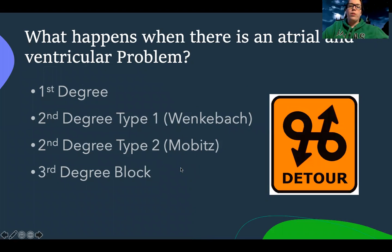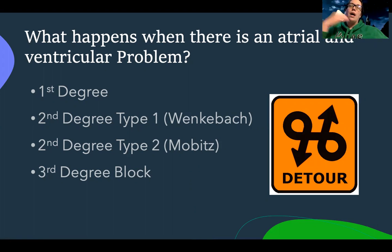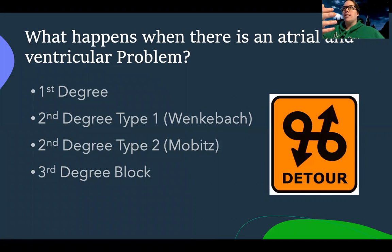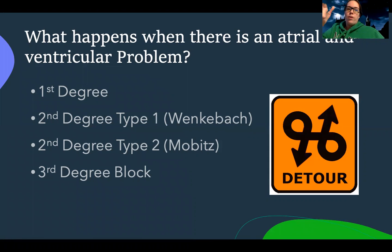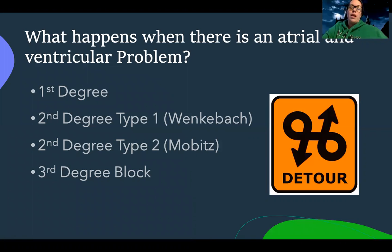So let's talk about the problem when there's an atrioventricular problem. In my previous PowerPoints, I talked about top of the heart problems and bottom of the heart problems. But when we're talking about blocks, effectively what I'm talking about is there's a problem with the top of the heart communicating with the bottom of the heart. The top of the heart needs to communicate with the bottom of the heart so that they're in sync — it's a very symbiotic relationship. If there's something wrong with that pathway, what happens is a block — think of it like a brick wall between the top and bottom of the heart where they're not communicating the way that they need to.